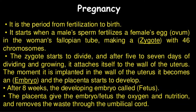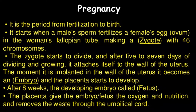After eight weeks, the developing embryo is also called a fetus. The placenta gives the embryo and fetus oxygen and nutrition, and removes waste through the umbilical cord. The placenta acts as an excretory organ, a respiratory organ, and also supplies nutrients to the growing fetus.